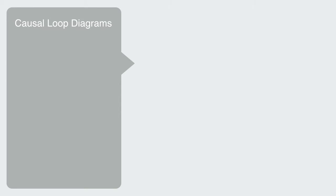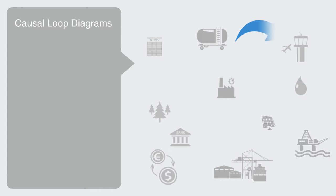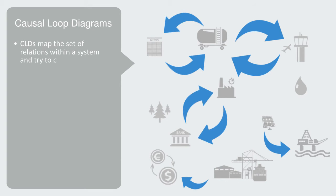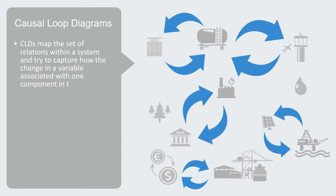Systems dynamics recognizes relationships of interdependency and provides us with models to focus on these two-way interactions through what are called causal loop diagrams. Causal loop diagrams, CLDs, are maps that model the set of relations within a system. They try to capture how the change in a variable associated with one component in the system will affect another. And these causal relations are called causal links.